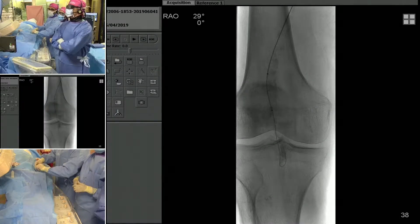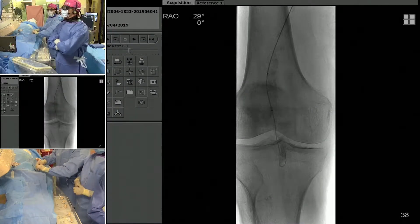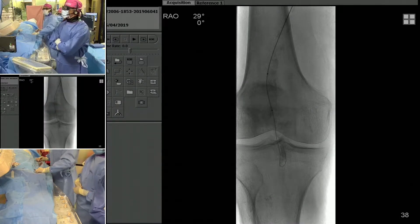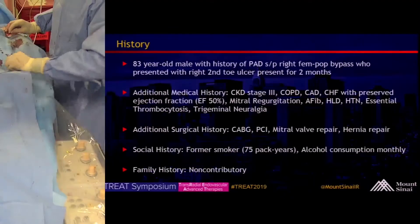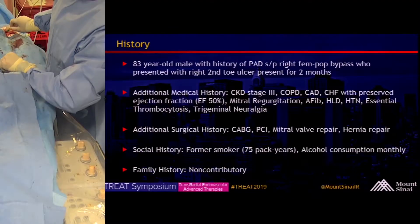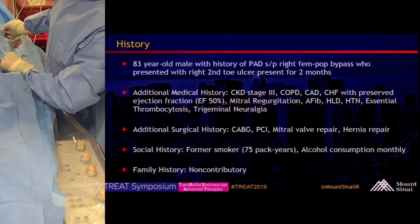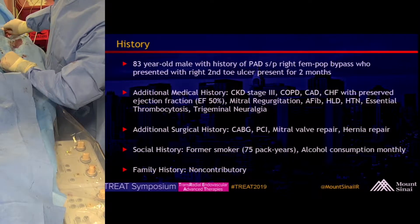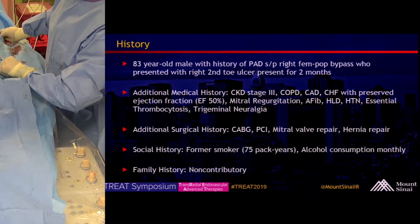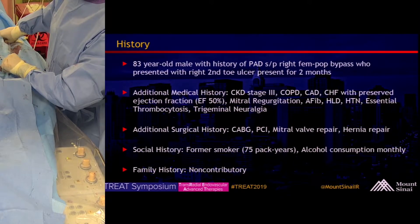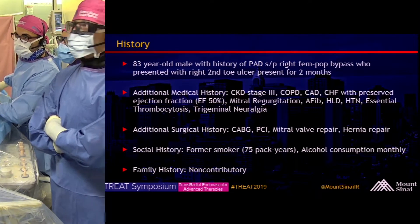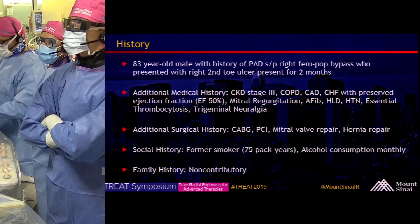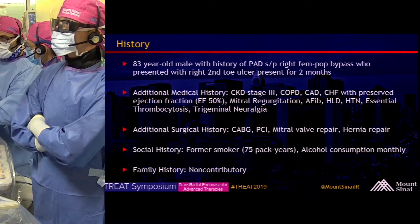We're presenting the case of an 83-year-old male with a history of TAD, previously treated with a right fem-pop bypass which is now occluded, who presented with a right second toe ulcer present for approximately two months. His additional medical history is significant for CKD stage 3 and additional cardiopulmonary comorbidities. Surgical history also significant for CABG. He is a 75-pack year former smoker.